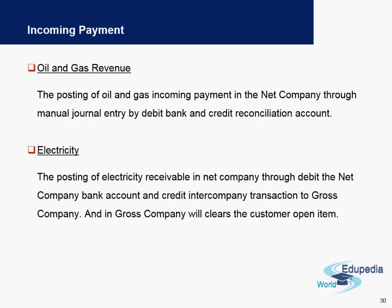For incoming payments, in this example we consider an oil and gas company where incoming payments are made through a manual journal entry by debiting the bank and crediting the reconciliation account. For an electricity company, it can be done by debiting the net bank company account and crediting the intercompany transaction to the cross company, and thus the cross company will clear it as a customer open item. Incoming payments can also be done automatically, wherein you allow the customer to make payment directly to your bank account and reconcile your bank balances at the end of the month.